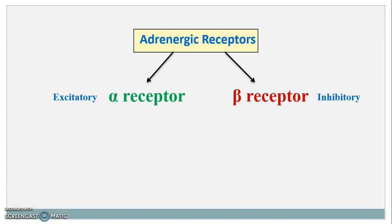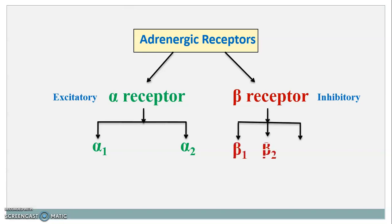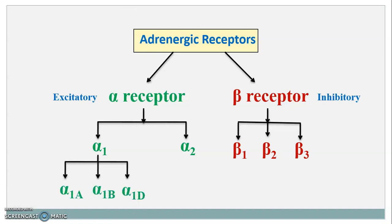Further, the alpha receptor is subdivided into alpha 1 receptor and alpha 2 receptor, and the beta receptor is further subdivided as beta 1 receptor, beta 2 receptor and beta 3 receptor. Further, alpha 1 receptor is subdivided into alpha 1A, alpha 1B, alpha 1D, whereas alpha 2 is subdivided into alpha 2A, alpha 2B and alpha 2C.